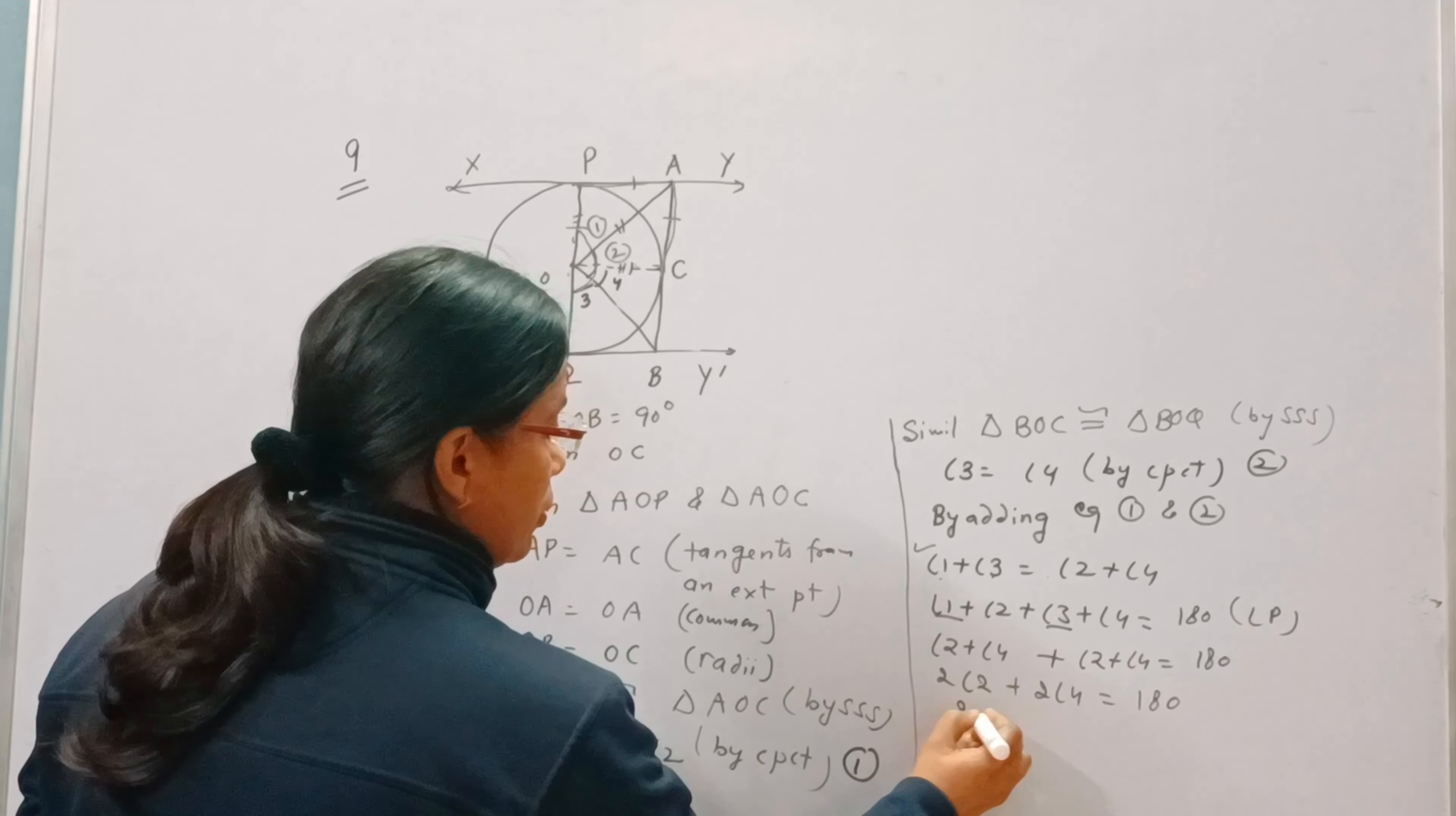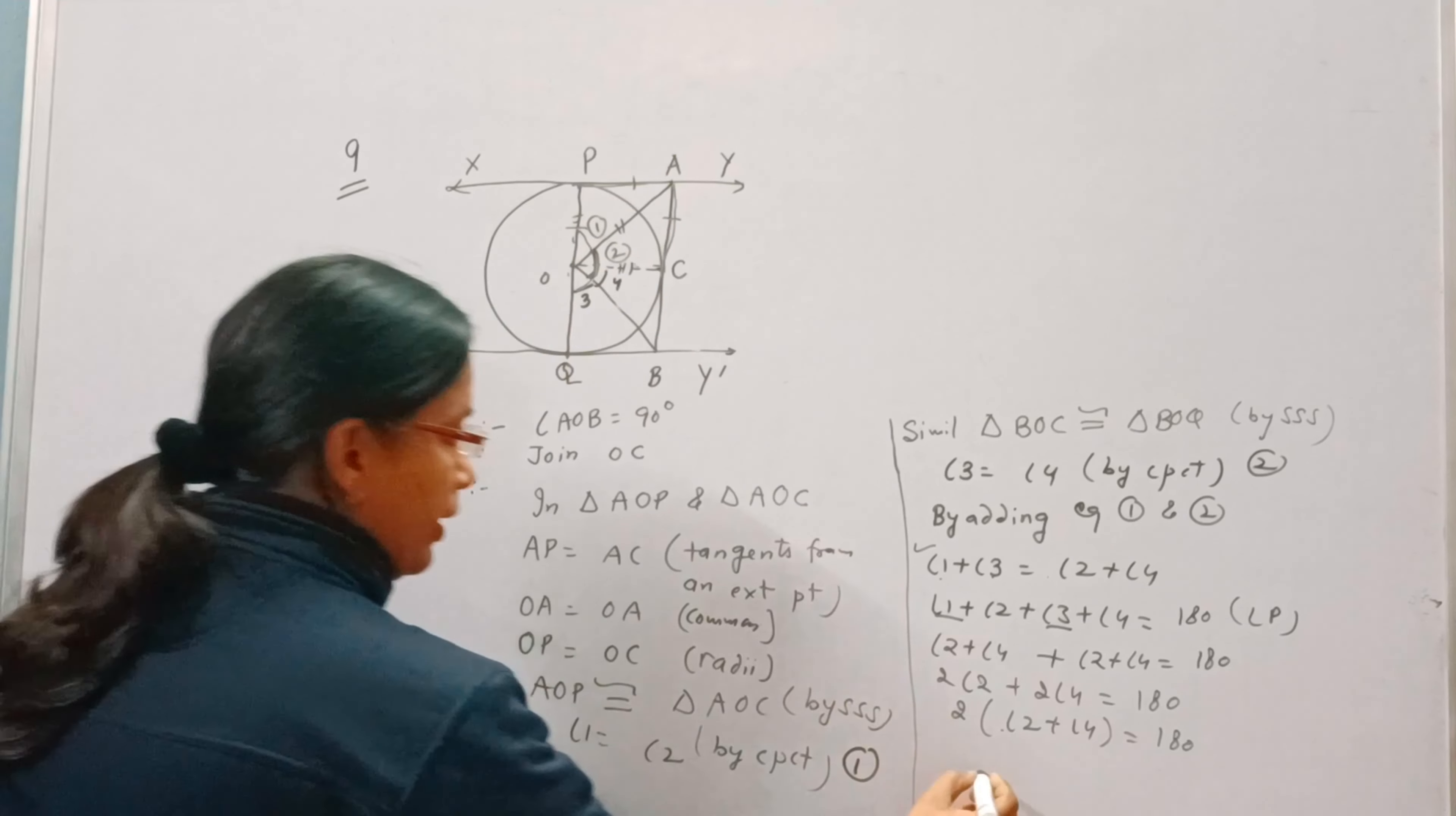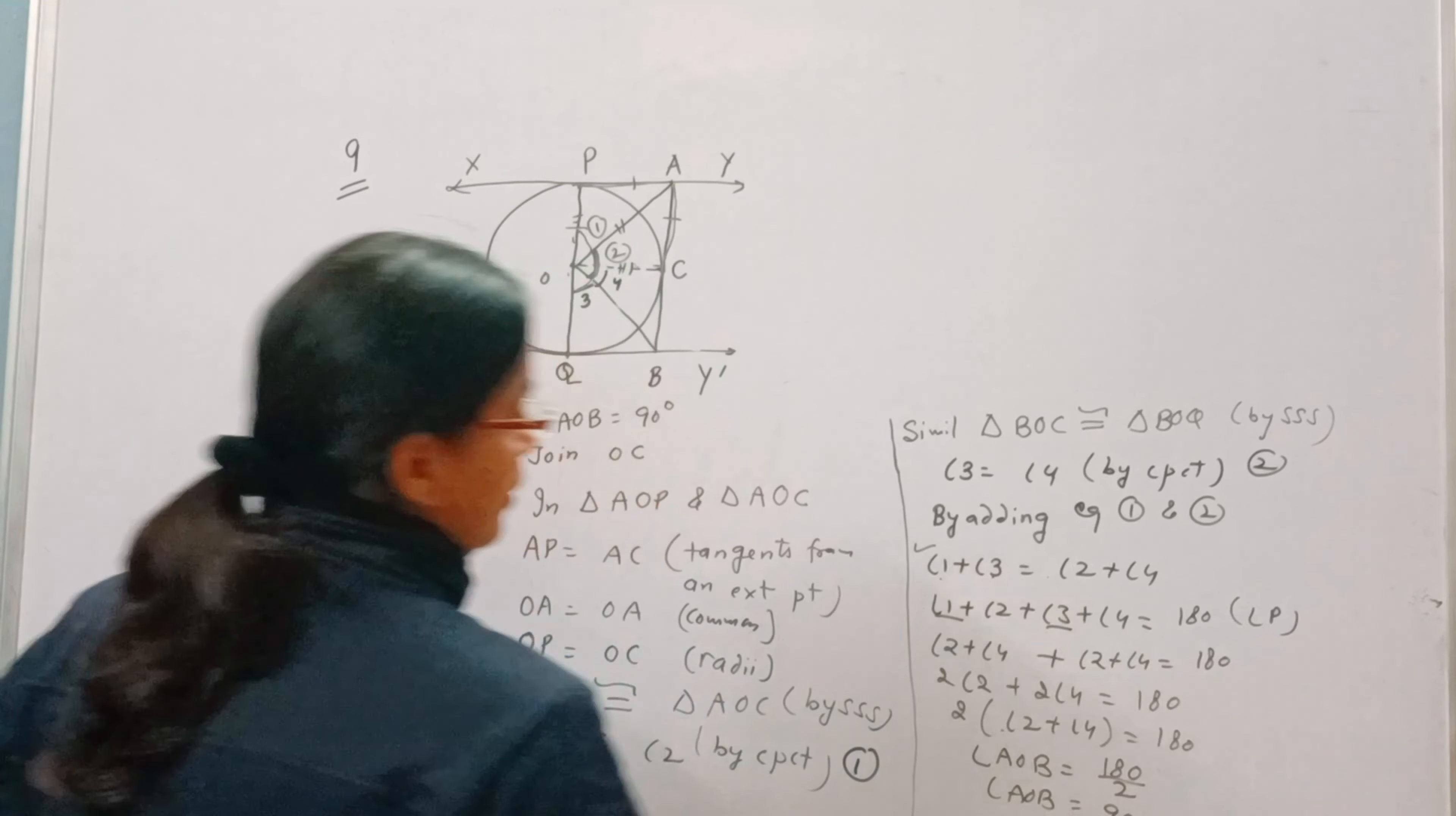Take out common. Angle 2 plus angle 4 is equal to 90. Now angle 2 plus 4, this 2 plus 4 will become angle aob. So angle aob will become equal to 90.